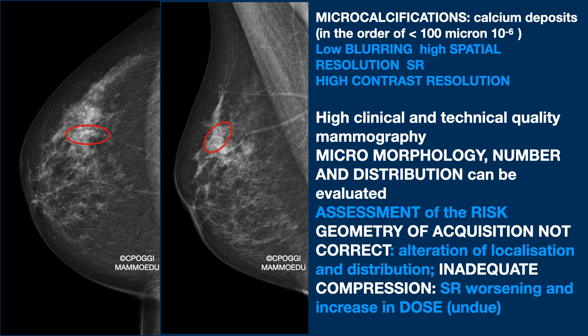Not only that — compression must also be adequate. Otherwise, there will be a worsening of spatial resolution, blurring of the edges, as well as an increase in dose that is undue, because the image will not be diagnostic.